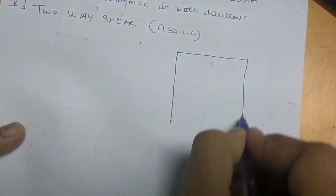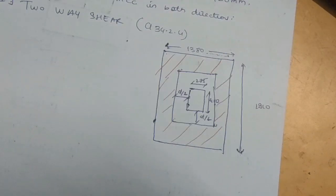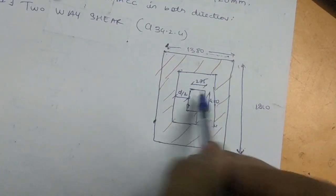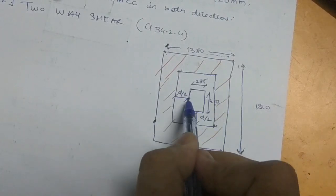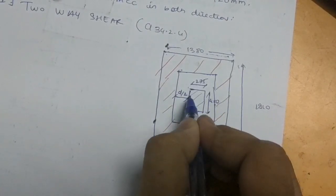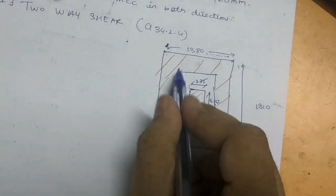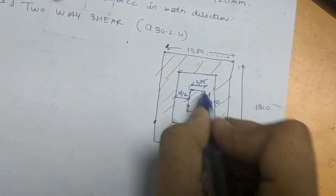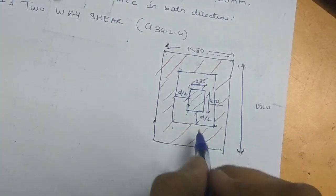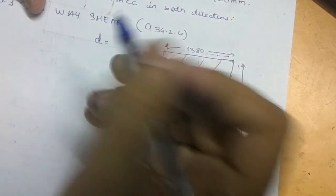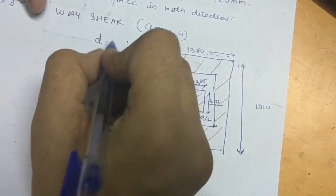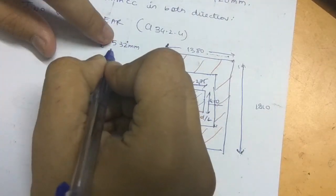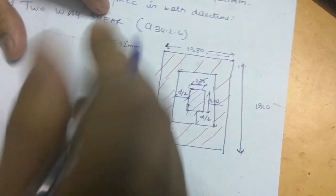In case of two-way shear, the footing looks like this. In this diagram you can see the width and length of the footing. The critical plane occurs at a distance of d/2 from the face of the column. The column width is 275 mm, the column length is 450 mm, and the effective depth D is 532 mm. Always take the smaller depth value.